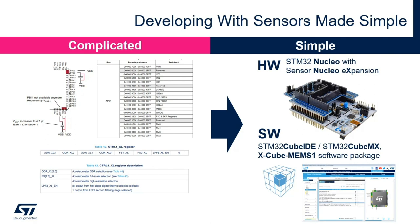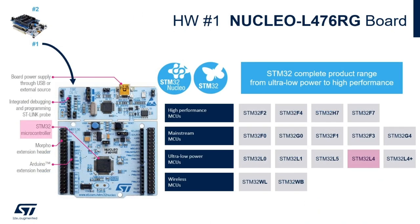Let's start with the hardware. Designing with Nucleo is a modular approach. We are going to use two boards. The first one is a Nucleo board which sports an STM32 microcontroller — the ultra-low power STM32L476, an ARM Cortex-M4 with DSP and floating point unit at 80 MHz. The board includes an ST-LINK in-circuit debugger and has various headers for added expansions.